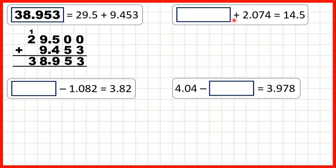Now, something plus 2.074 equals 14.5. So here, we have a missing addition problem, and whenever we have a missing number in an addition, we always use the inverse operation, so we use subtraction to find our missing number.